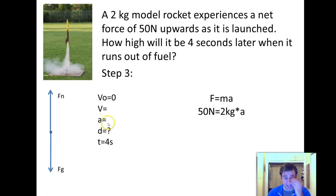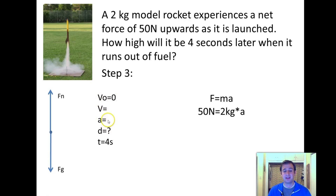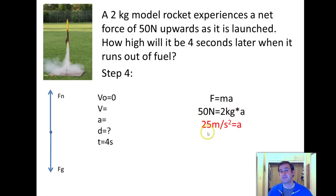Can I solve for A using kinematics first? No — I don't know A, V, or D, so kinematics is unsolvable here. But F = MA I can solve because I'm just missing A. Dividing by 2 kilograms gives us 25 meters per second squared as our acceleration.